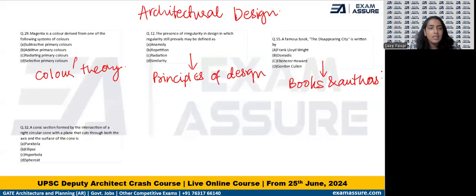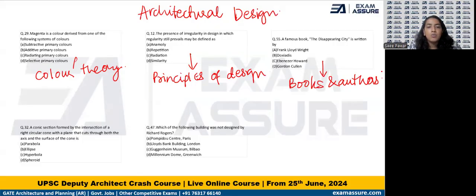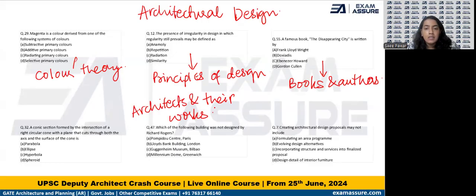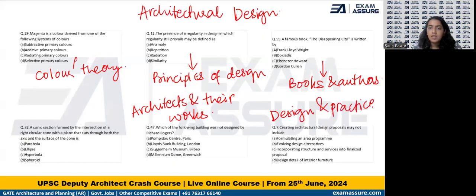Another question asks about a conic section formed by the intersection of a right circular cone with a plane that cuts through both the axis and the surface of the cone — related to geometry and shapes. Then, 'Which of the following is not a building designed by Richard Rogers?' — architects and their works. Finally, 'Creating architectural design proposals may not include...' — relating to basic design and practice. These questions give a much clearer idea of which topics to focus on within architectural design.